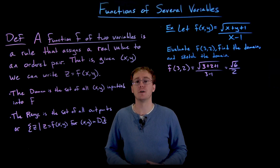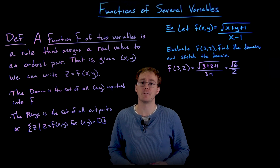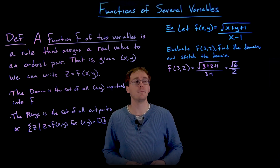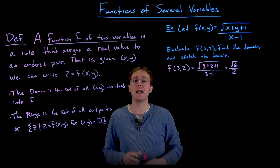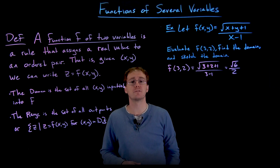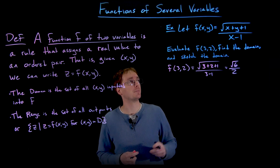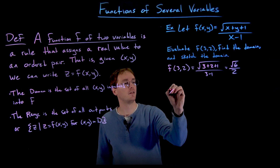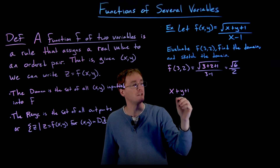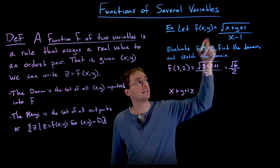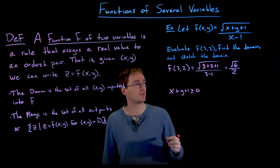Next, we need to find the domain for our two-variable function. There are a few algebraic rules we must not break. We cannot divide by zero, and we can't take the square root of a negative number. Since we have a square root, the quantity x plus y plus one must always be greater than or equal to zero. So we require that x plus y plus one be greater than or equal to zero.